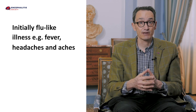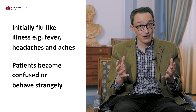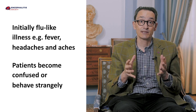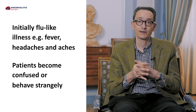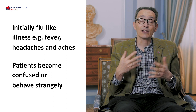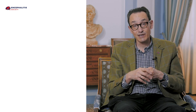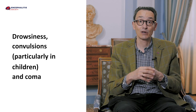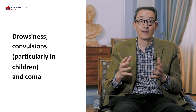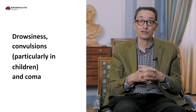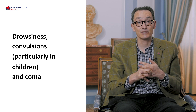But the clue that this is something more serious is that patients may become confused or muddled, or they may even behave strangely. Sometimes this means patients are thought to have psychiatric illness and enter psychiatric services. But that confusion and strange behaviour often progresses so that they become drowsy, they may have convulsions — children especially are more likely to have convulsions — and they may slip into coma. All these things together make it quite clear that this is a patient who has a serious brain problem, a brain infection, and needs to get medical attention as soon as possible.